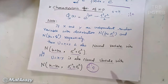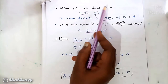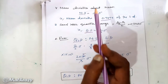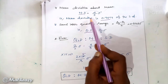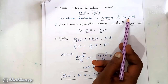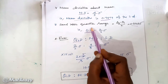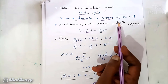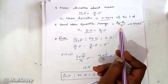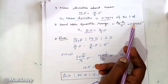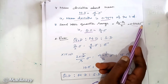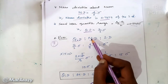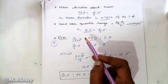Very important: Mean deviation about the mean in a normal distribution equals 4/5 of standard deviation, that is, 0.7979 × sigma. And quartile deviation equals 2/3 of standard deviation, calculated as Q3 − Q1 divided by 2. The quartile deviation value is 0.6745 × sigma. These are two important ratios to remember.